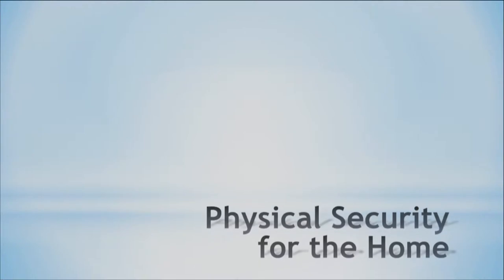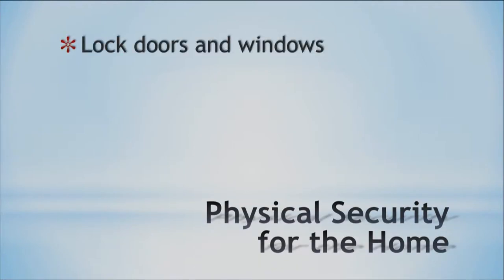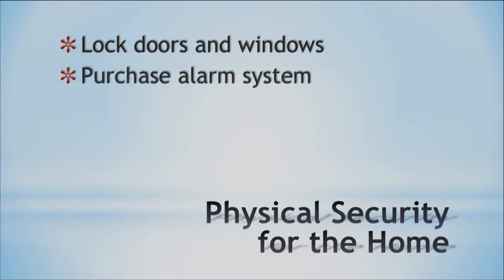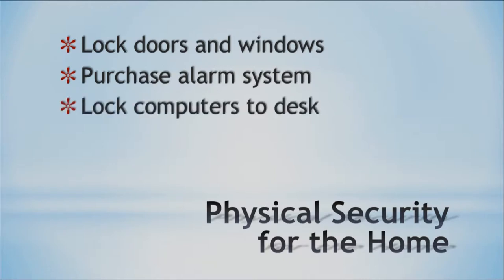Let's look at physical security for the home, because the previous discussion was more for companies. For the home, when you leave, one of the things you want to do is make sure that you lock all your doors and windows. This is a very easy way of gaining entry into the house. With windows, you could even put in a security bar so it doesn't slide open easily. You can also go and purchase an alarm system, and this will help protect your home. Any computer components or anything of value, you can lock it to a desk or put it in a safe at home.